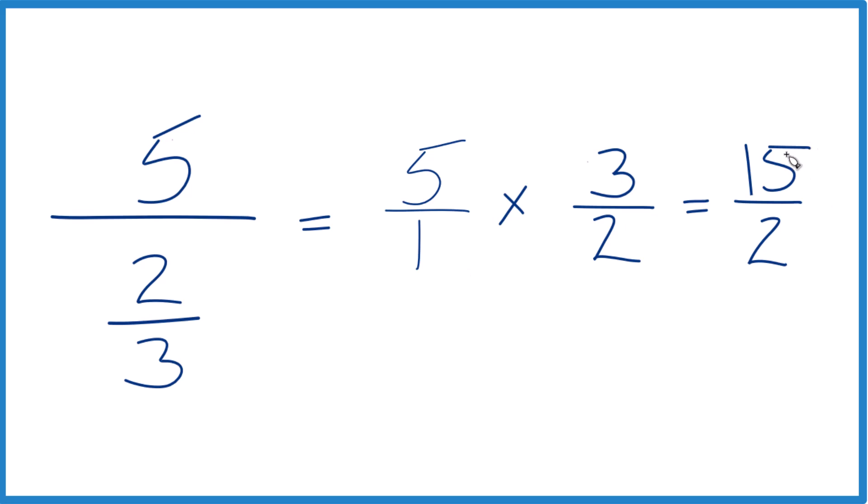And you should end up with 15 over 2. This is an improper fraction, numerator bigger than denominator. So let's change this to a mixed number. 2 goes into 15, 7 times 2 is 14 with 1 left over. Bring the 2 across. So we could write it as 7 and 1 half as well.